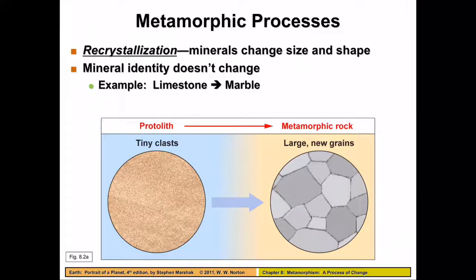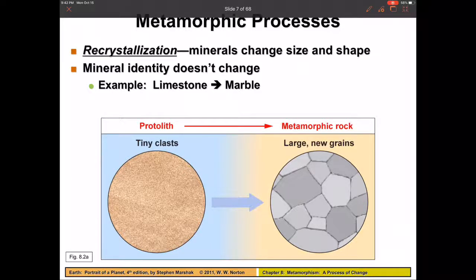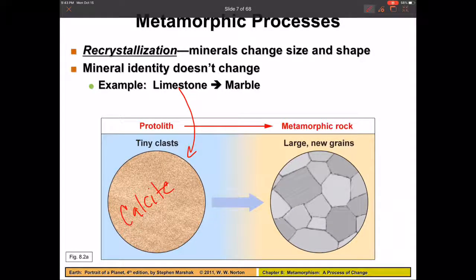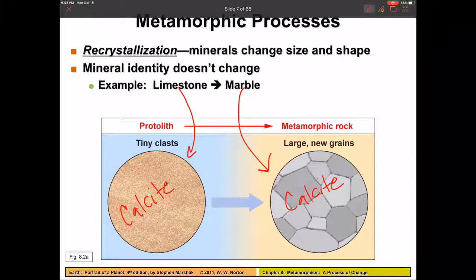Minerals can also recrystallize, meaning they're basically just changing shape and size — getting bigger. For example, on the left we have limestone, which is made up of the mineral calcite, but in limestone those grains are microscopic. When calcite gets baked with temperature, it turns into marble, which is still also made of calcite — the minerals are just now much larger and visible. You'd be able to do the hydrochloric acid test on it; it would fizz with limestone and it would still fizz with marble.